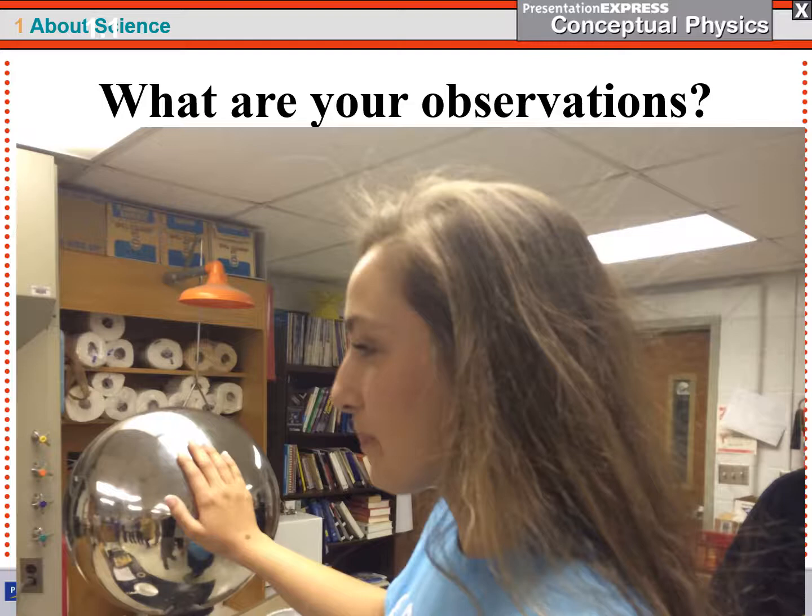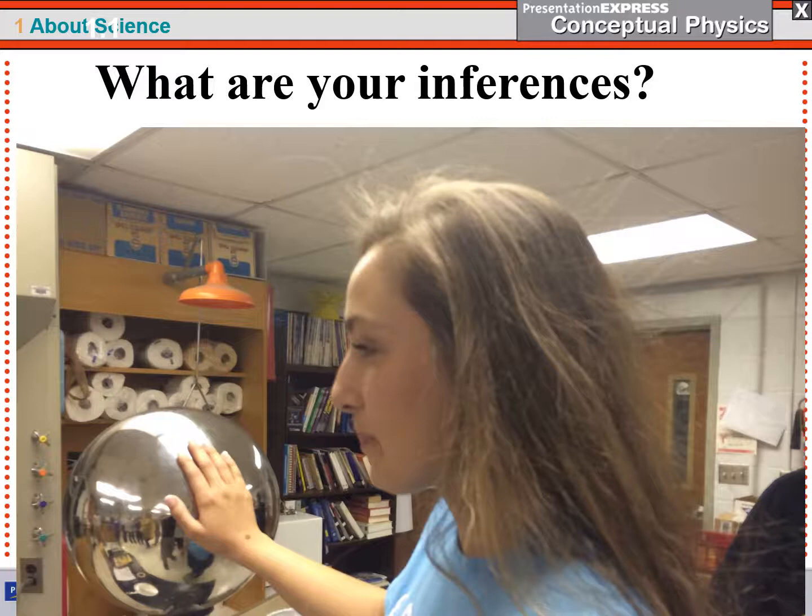If you look really closely at this picture, let me blow it up just a little bit. But you might be able to see that her hair is standing up. So we could say our observation is that her hair is a mess. What could you infer from that? Well, we might make an inference that somehow she's picking up an electrical charge when she's touching this device over here. And that charge is giving her hair static. That's an inference.